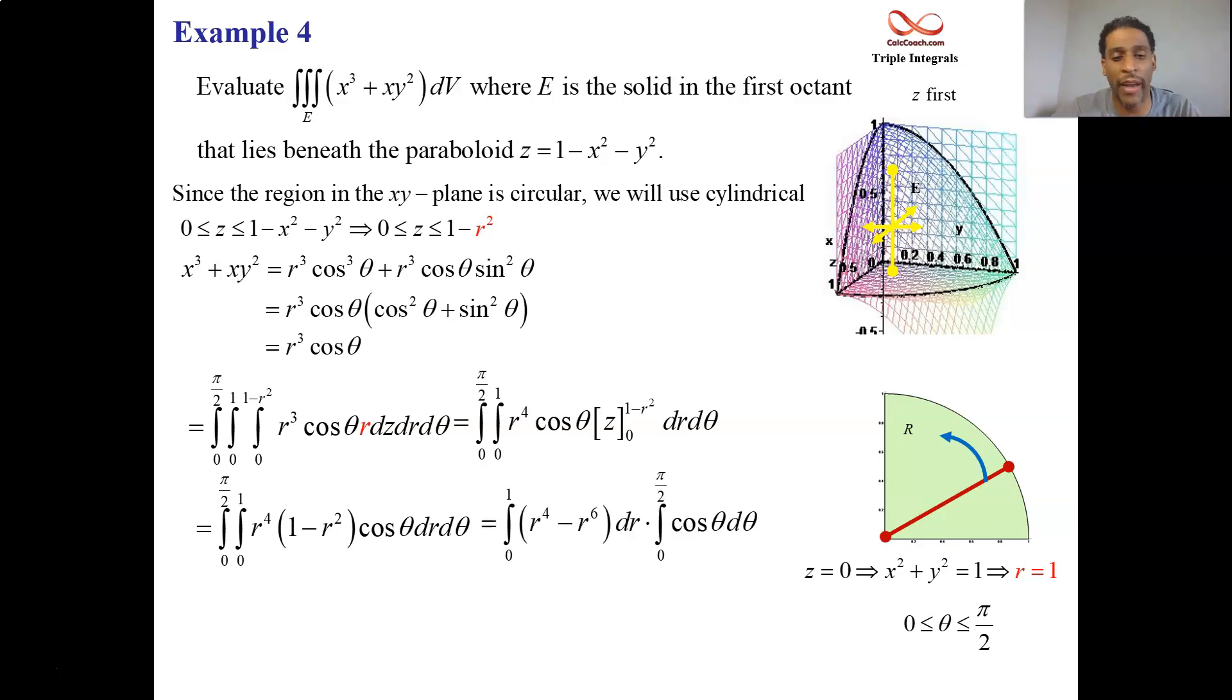It's just r to the fourth minus r to the sixth. This integrand is separable and the bounds are all numerical. We could actually do this as two separate calc 1 integrals and multiply the results. r to the fifth over five minus r to the seventh over seven. Anti-derivative of cosine theta, sine theta. Put in the bounds of fifth minus a seventh. And then multiply by the sine of pi over two. Because the zeros give you zero for both of these. And that's two thirty-fifths.